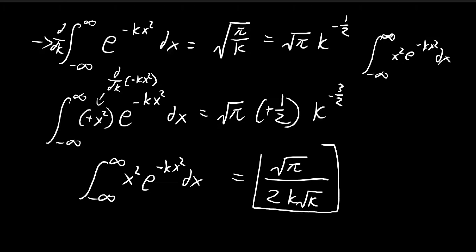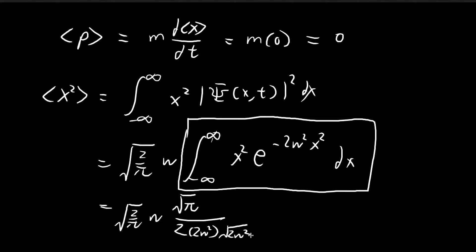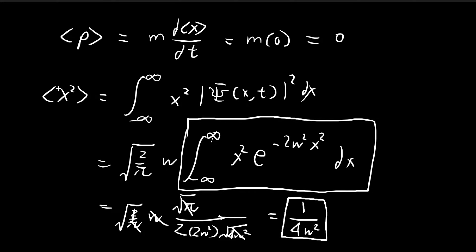We can now apply this formula directly to our integral where k equals 2w squared. Substituting in, we have 2 divided by the square root of pi times w, multiplied by the square root of pi divided by 2 times k to the negative three halves where k equals 2w squared. After simplification — the square root of pi cancels, the square root of 2 cancels, and the square root of w squared becomes w which cancels — we are left with 1 divided by 4w squared. This is the expected value of x squared.